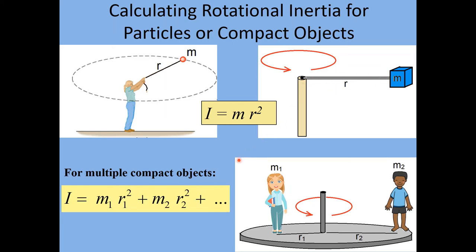If we have multiple compact objects, we simply add up the individual rotational inertias. For two kids on a spinning playground ride, the girl with mass m1 at radius r1 contributes m1·r1², and the boy with mass m2 at radius r2 contributes m2·r2². We add all contributions together for the total rotational inertia. This is slightly more complex than just adding masses — we must account for each object's distance from the axis.